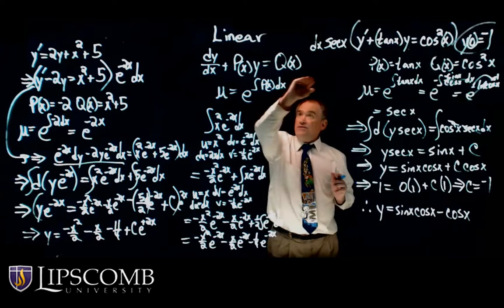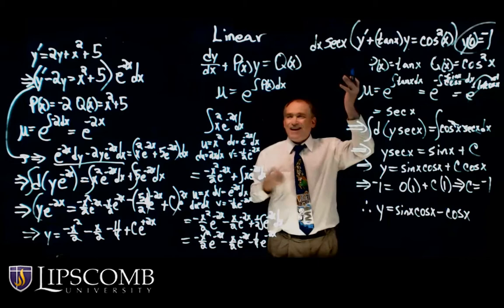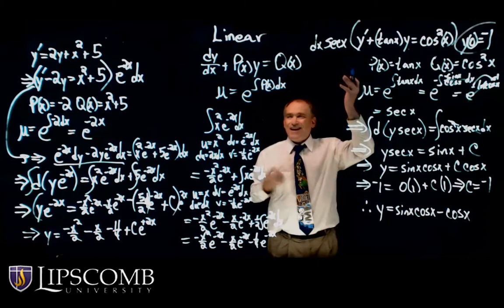So to summarize the linear equations method: Step 1, get it in the standard form. Step 2, find and multiply by the integrating factor. Then multiply everything by the integrating factor times dx or dy, as the case may be. That one side will always be the total differential of the unknown function times the integrating factor.